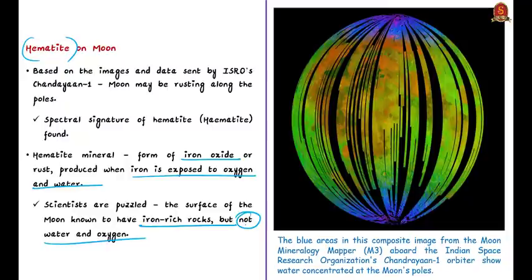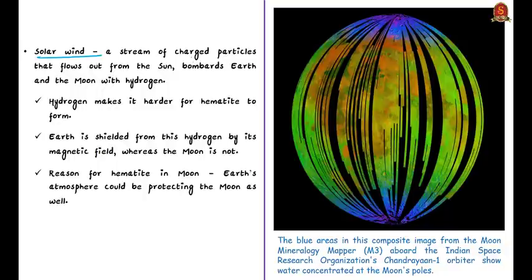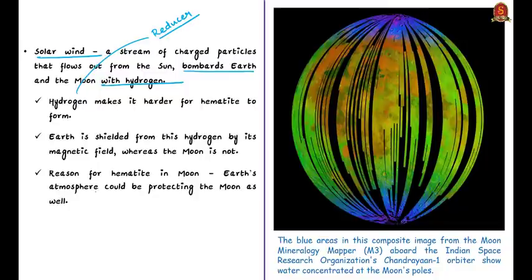The mystery starts with the solar wind — a stream of charged particles that flows out from the sun — which bombards the earth and moon with hydrogen. Hydrogen makes it harder for hematite to form because it is a reducing agent, meaning it adds electrons to the materials it interacts with. That is the exact opposite of what is needed to make hematite; for iron to rust, it requires an oxidizing agent which removes electrons. Earth is shielded from this hydrogen by its magnetic field, whereas the moon is not, so logically hematite should not have been formed on the moon.